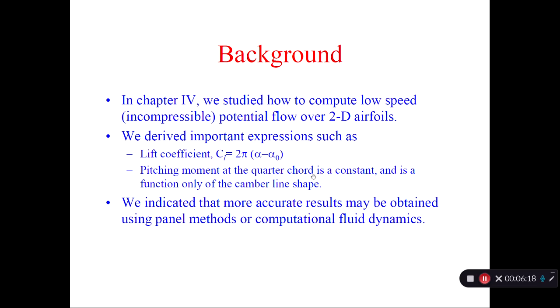So here is the 2D theory from chapter 4. Cl equal to 2 pi times alpha minus alpha naught. Alpha is in radians. Alpha naught is in radians. Alpha naught is called the zero lift angle or zero lift angle of attack. 2 pi is a lift curve slope. We also know that the pitching moment at the quarter chord is a constant. The quarter chord therefore is called the aerodynamic center.